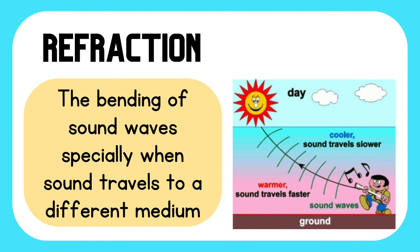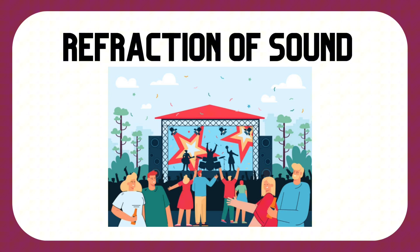Sound waves bend due to the difference in temperature. In warmer air, particles are far apart, and in cooler air, particles are closer together — that's the reason why refraction happens. During the daytime, sound tends to bend upwards, and during the nighttime, sound tends to bend downward. That's the reason why concerts are better heard in an open area during the night.